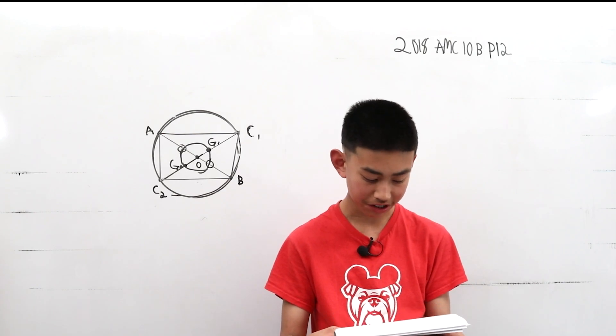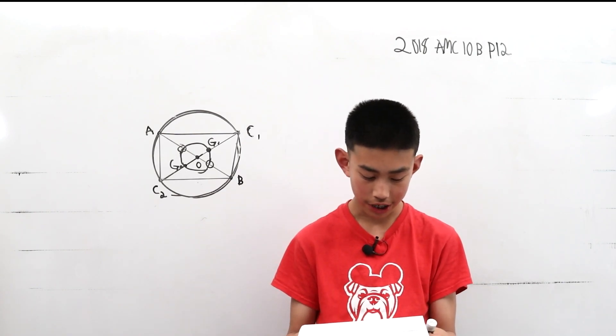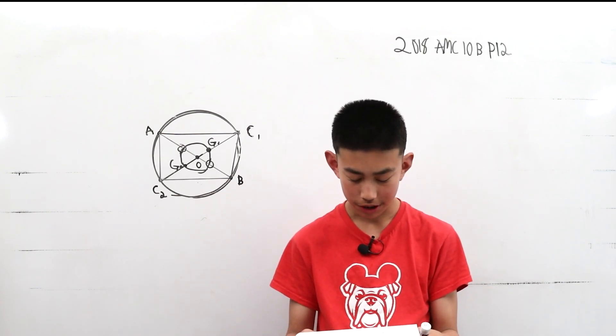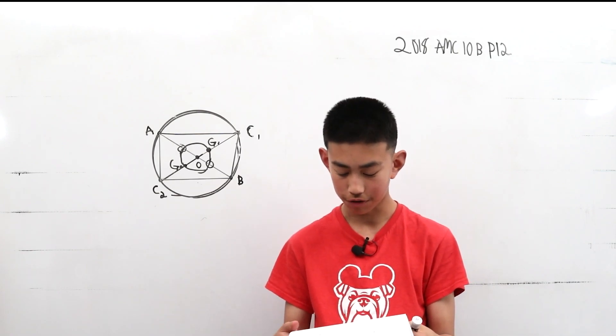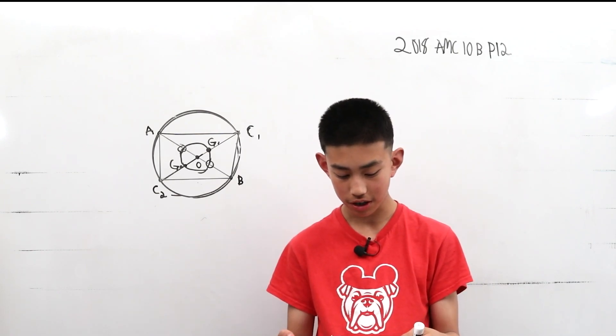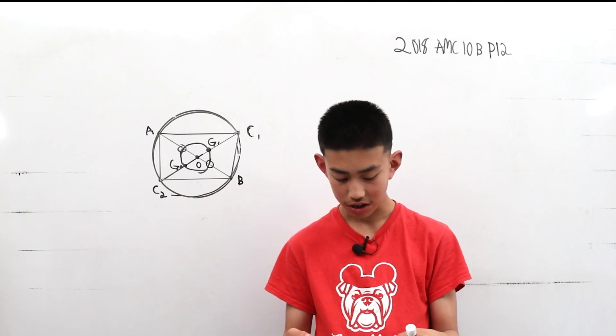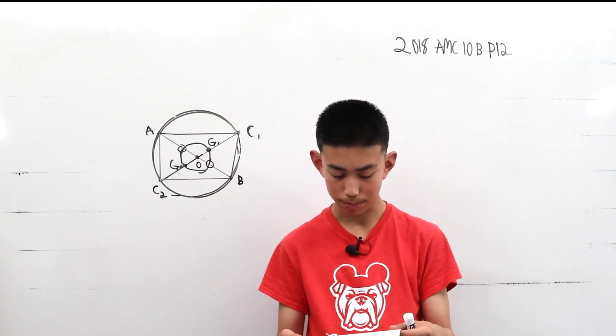As point C moves around the circle, the centroid of triangle ABC traces out a closed curve missing two points. To the nearest positive integer, what is the area of the region bounded by this curve?